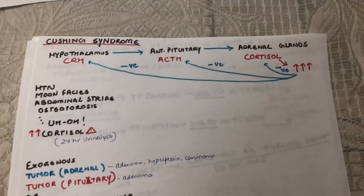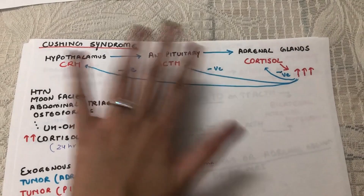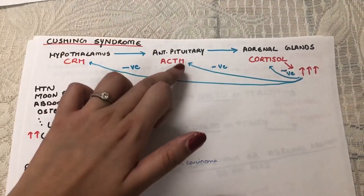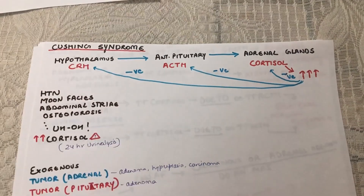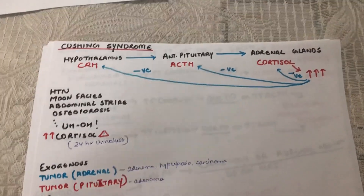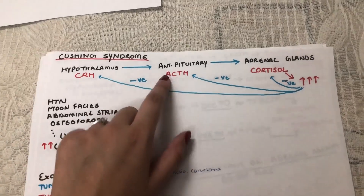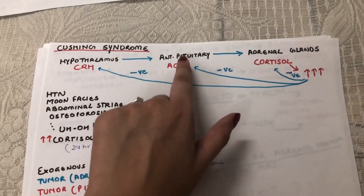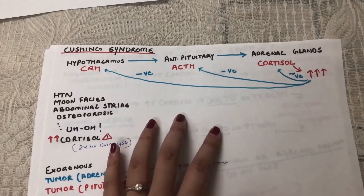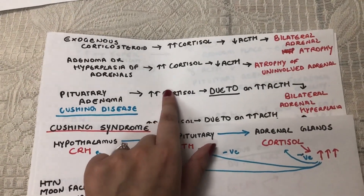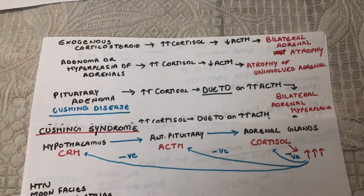If the problem is a pituitary adenoma secreting excess ACTH unregulated, this is called Cushing's disease — the most common endogenous cause of Cushing syndrome. A useful memory trick: the pituitary is an organ, organs get diseases, hence 'Cushing's disease.' Here you'll see increased ACTH acting on normal adrenal glands, resulting in increased cortisol and bilateral adrenal hyperplasia as both adrenals get over-stimulated.